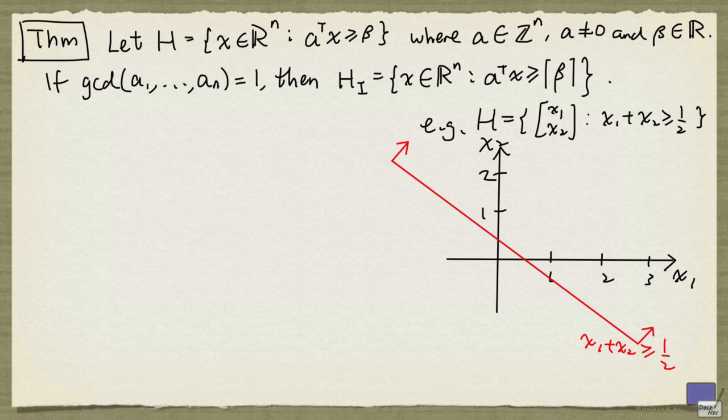And the inequality x1 + x2 ≥ 1/2 can be represented by this. Now let's mark the integer points satisfying this inequality.